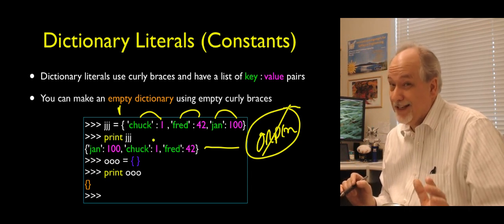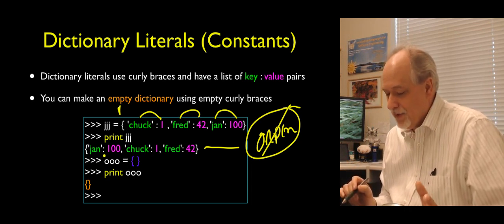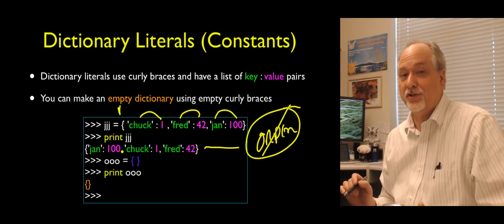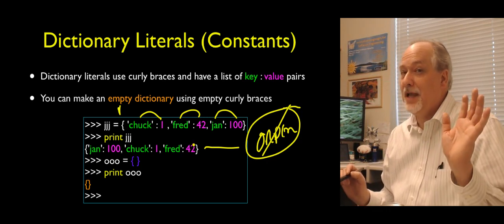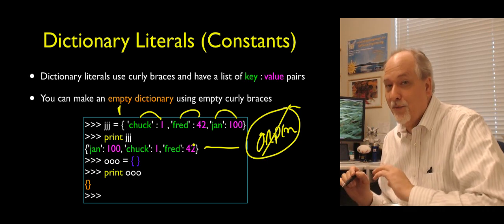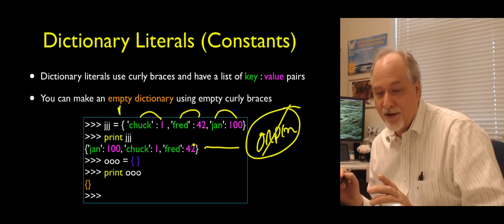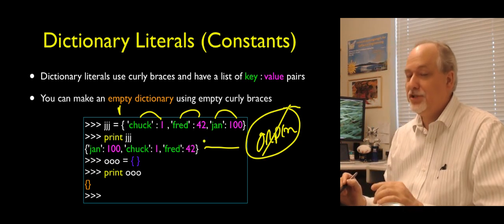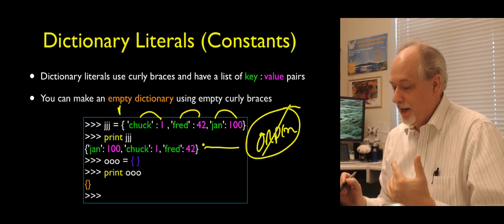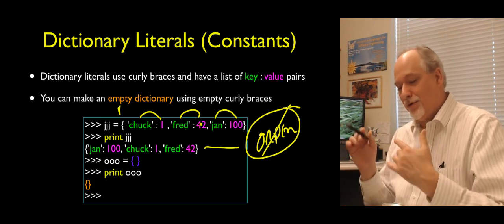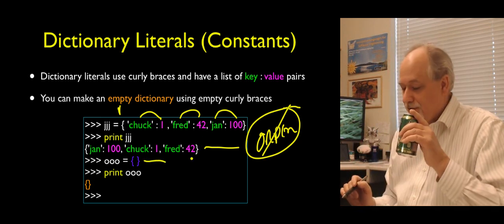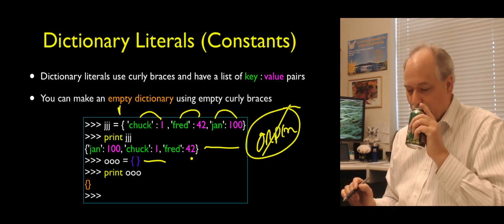They might come out in the same order sometimes, but that's just luck. It's not broken if they do — it's just not internally stored in insertion order. Adding an element may reorder them. You can make an empty dictionary with just curly brace, curly brace.